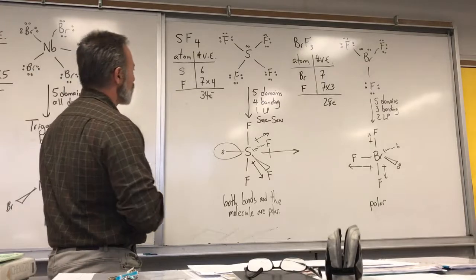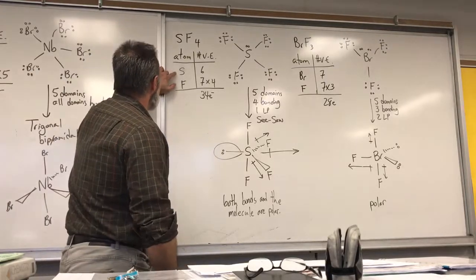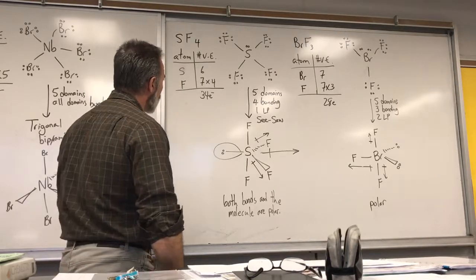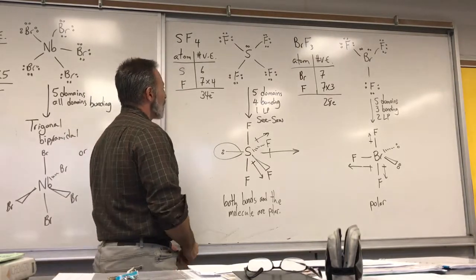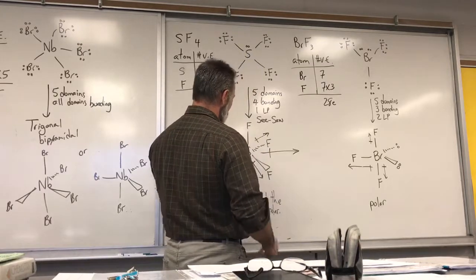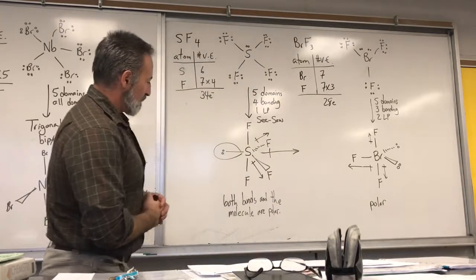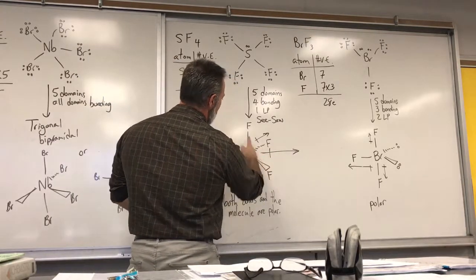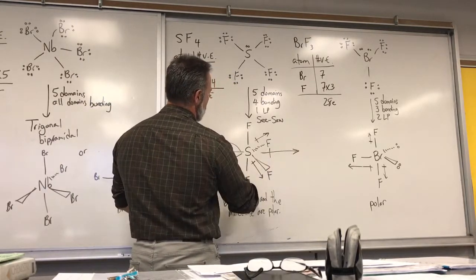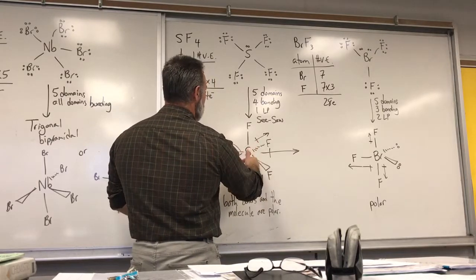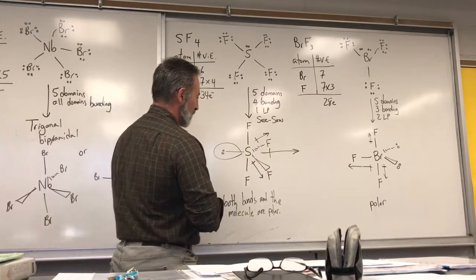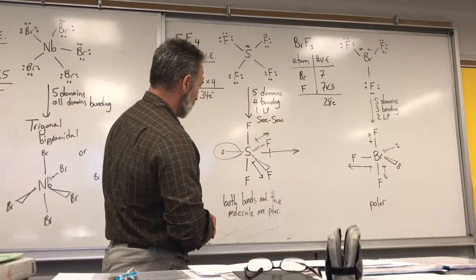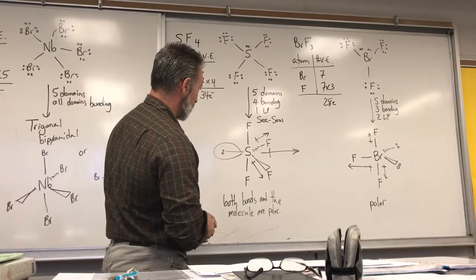Continuing with sulfur tetrafluoride: sulfur has six valence electrons, fluorine has seven, giving a total of 34 electrons, which gives you five domains — four bonding and one lone pair — meaning it's a seesaw shape. Here are the two legs of the seesaw, here's the plank of the seesaw, and the lone pair you can imagine as somebody standing on the seesaw. You can clearly see the seesaw or sawhorse shape — they have different names for it, but seesaw is what we use.